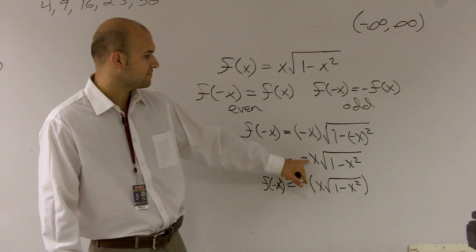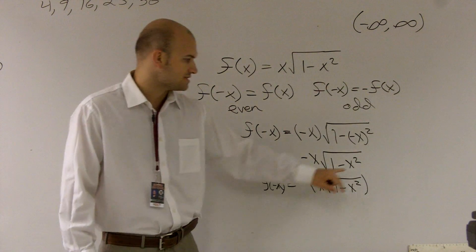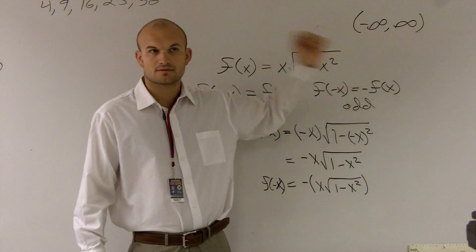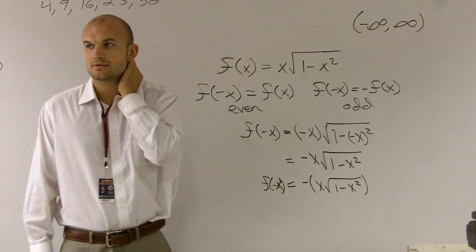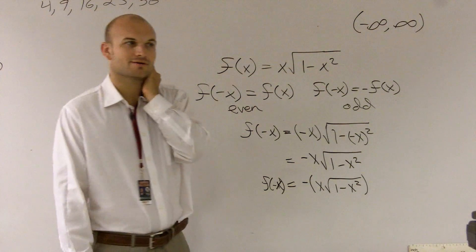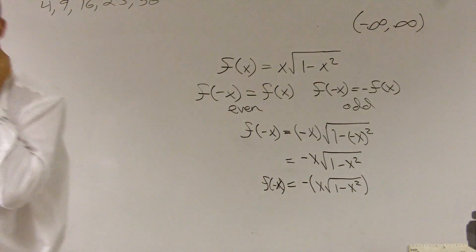But in this function, once I was able to take out the negative x and put these in parentheses, I get a negative f of x. Anybody have any questions on what I did? You just want to stare at it a little bit longer? Well, you guys can replay it many times.